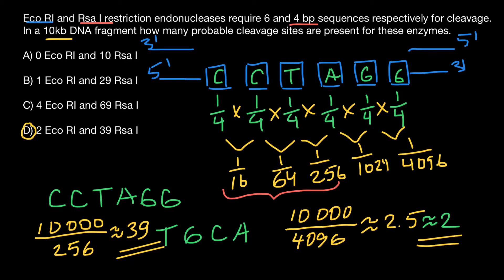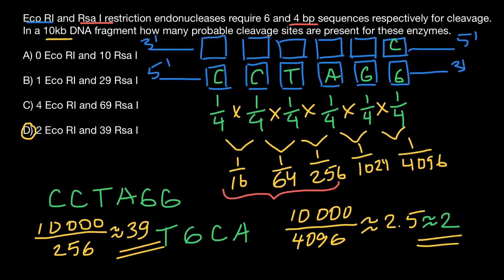If we build the second strand of the DNA, we have 5-prime on one end and 3-prime on the other. Let's put six boxes here and see what sequence appears on the second strand. Guanine base-pairs with cytosine, then cytosine, thymine, adenine, guanine, and guanine. So the second strand reads 5-prime: C, C, T, A, G, G — which is the same sequence as on the original strand.